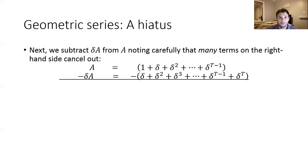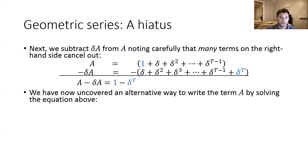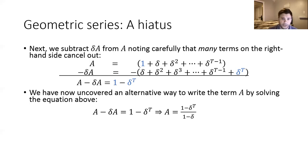When we do this, there are many terms on the right-hand side of the equal sign that are going to cancel out. All the Delta terms aside from Delta-to-the-T will wind up canceling with each other. The only terms we're going to be left with on the right-hand side are the one and the Delta-to-the-T. So we go ahead and do that subtraction, we wind up with a single equation. We can now use this equation to solve for A — it's a sneaky trick. We factor out an A from the left-hand side, divide through by one minus Delta, and this allows us to rewrite an expression for A as the ratio of one minus Delta-to-the-T all over the quantity one minus Delta.